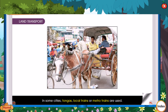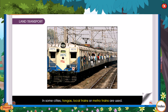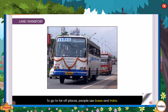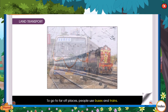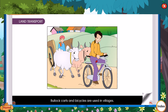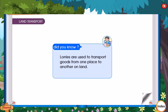In some cities, tongas, local trains, and metro trains are used. To go to far off places, people use buses and trains. Bullock carts and bicycles are used in villages. Lorries are used to transport goods from one place to another on land.